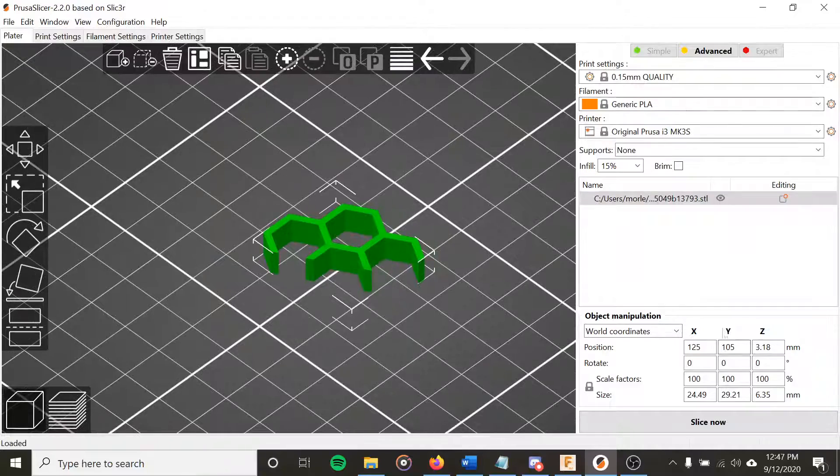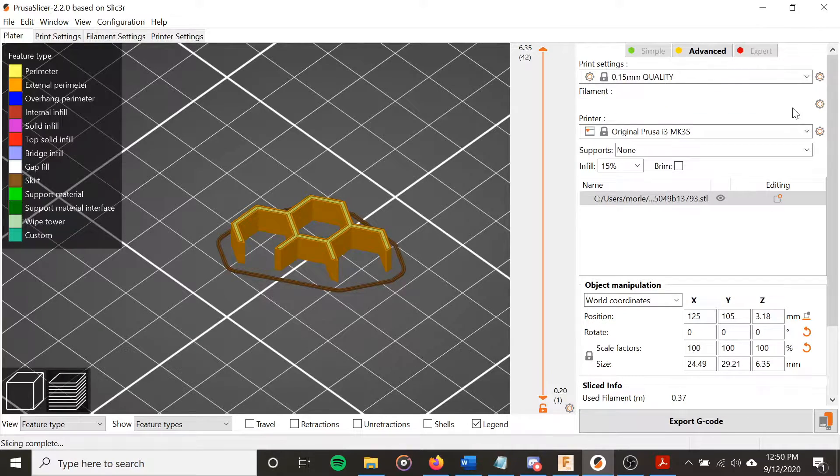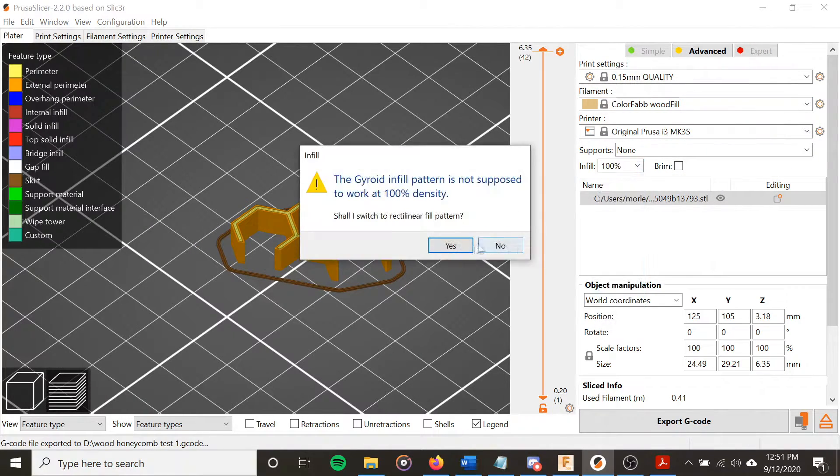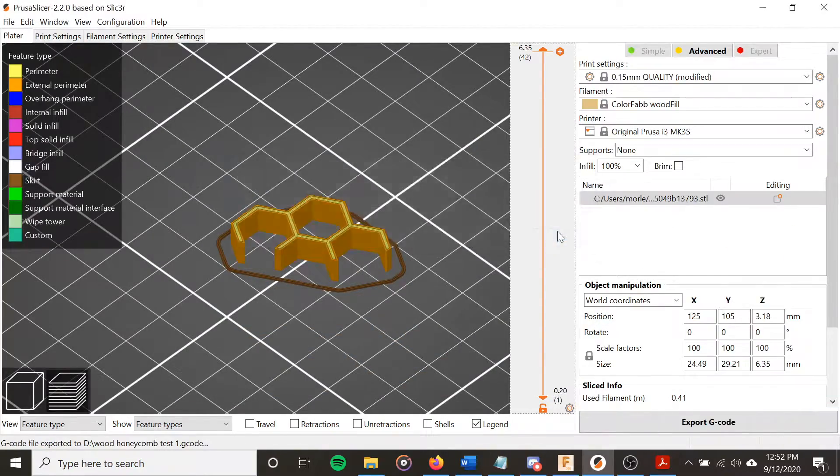With the design done, I wanted to print a small test piece with the wood PLA. In Prusa Slicer, I used the preset filament profile for color fab wood fill, 0.15mm layer height, and 100% infill.